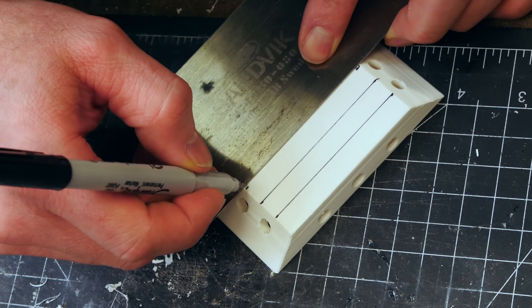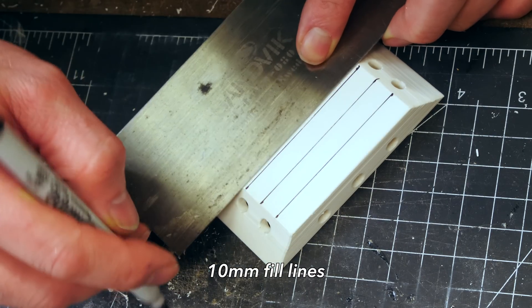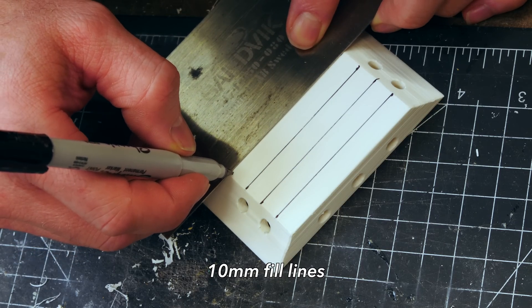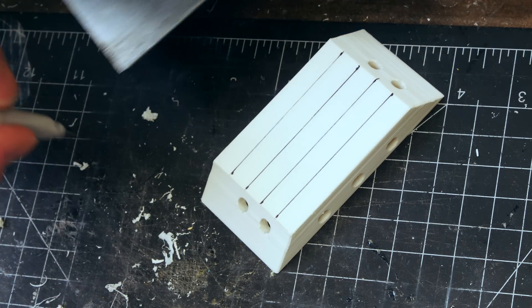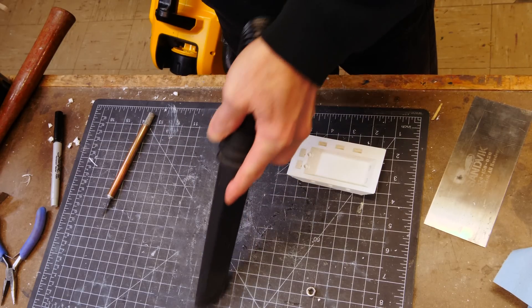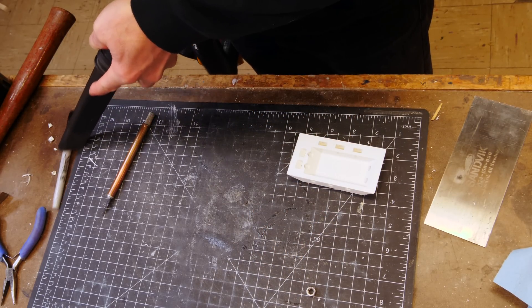I put in 10mm mark or fill lines here on the sides of the molds. I actually print those in, but they were too difficult to clean out the support material, so I just colored them in with some Sharpie.